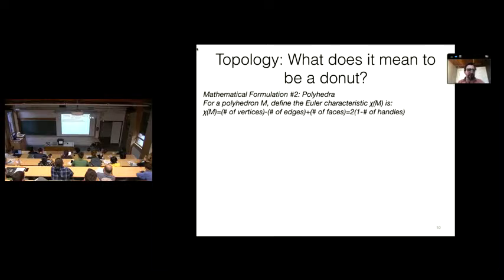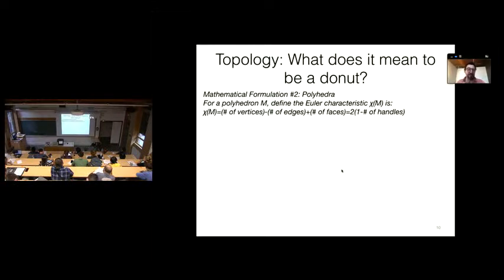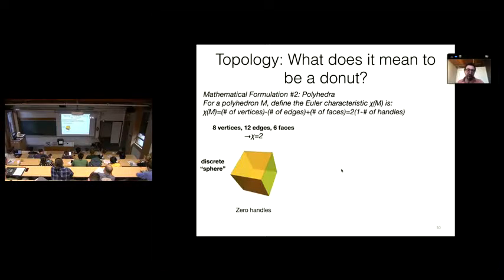An easier way to get intuition is to think about polyhedra. I can make a closed surface out of polyhedra instead of making it smooth. The Euler characteristic for a polyhedral surface is the number of vertices minus the number of edges plus the number of faces, and the Gauss-Bonnet theorem says that equals two times one minus the number of handles. For a cube: eight vertices, twelve edges, six faces — chi equals two. So a cube is topologically a sphere — no handles.